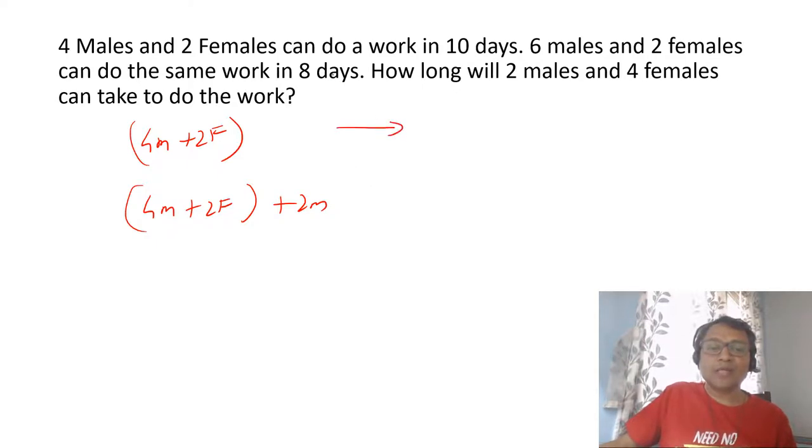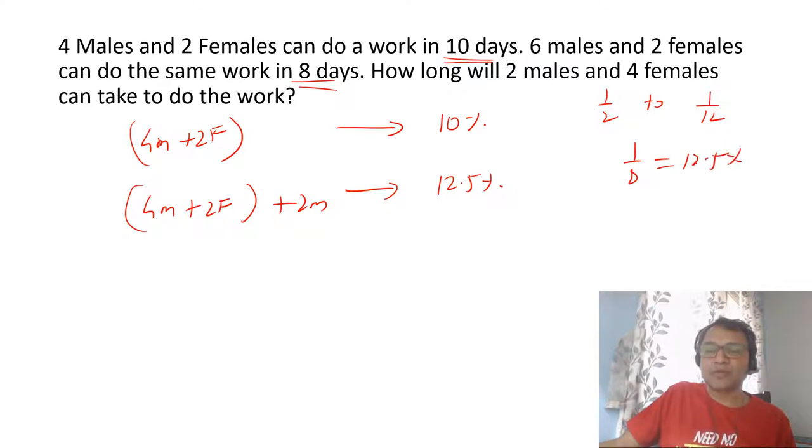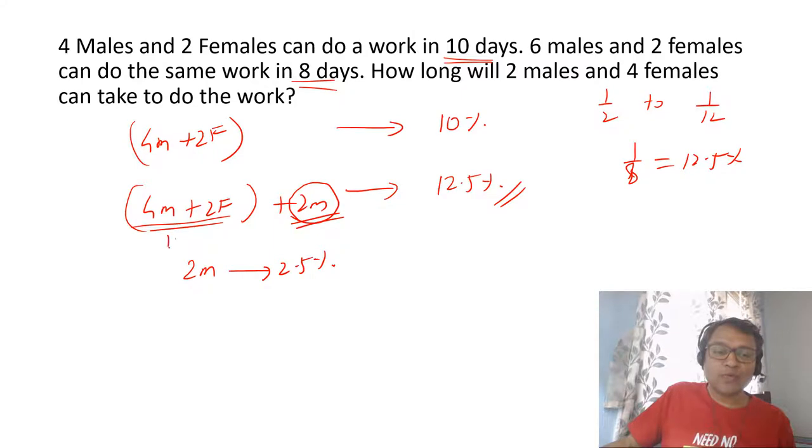The first group can complete work in 10 days, so they do 10 percent work per day. If you can complete work in 8 days, that's 12.5 percent work per day. You should be comfortable with calculating that one by eight is 12.5 percent. So that means this extra 2.5 percent is done by these two males. These two males can do 2.5 percent work in one day. The extra 2.5 is done by these two males.